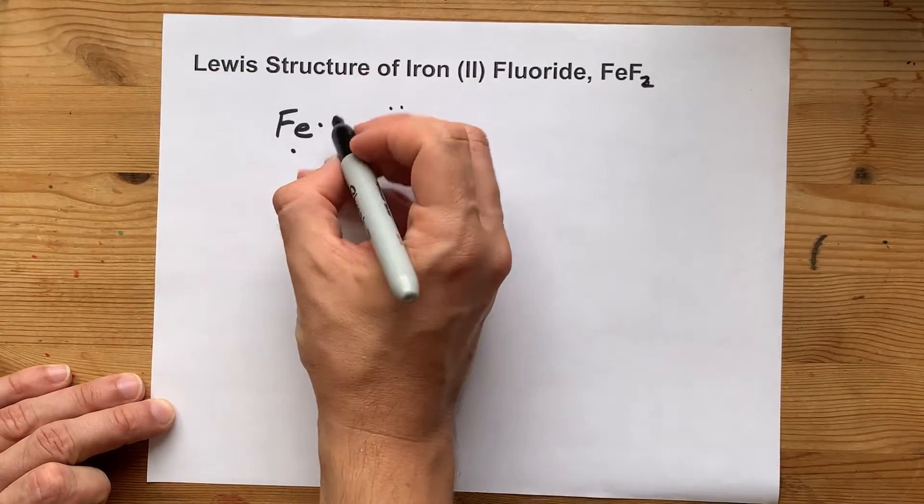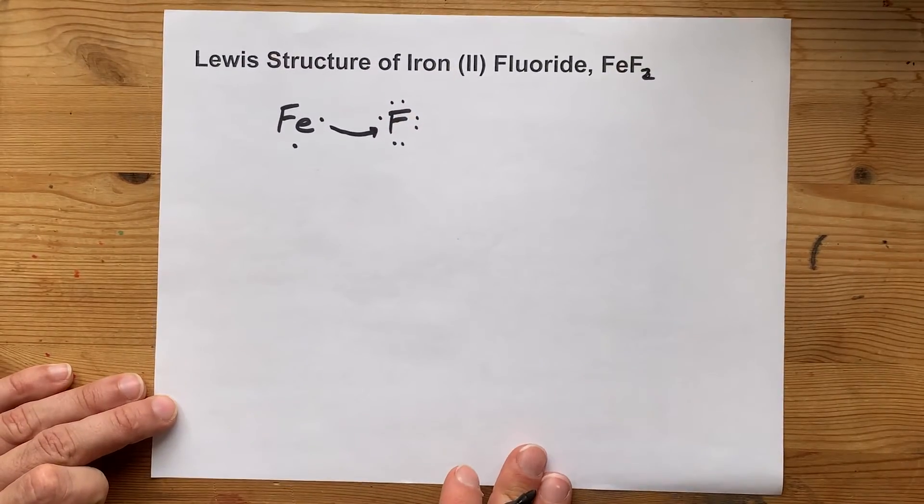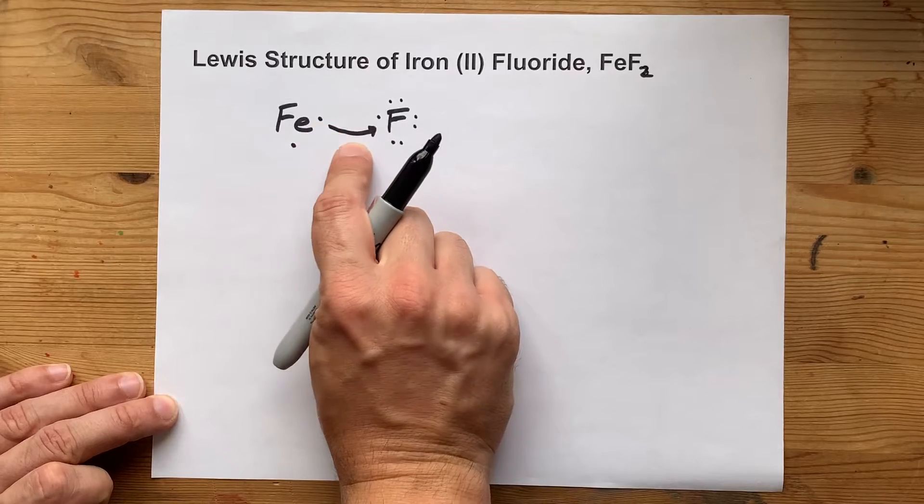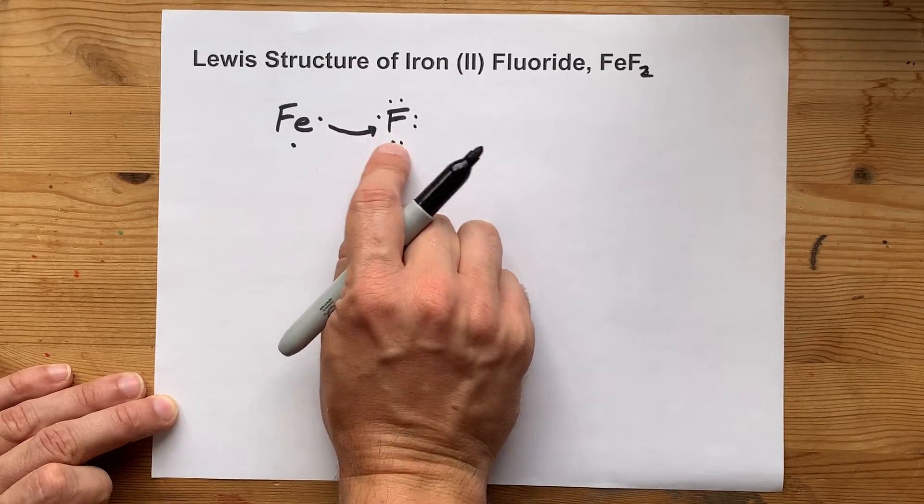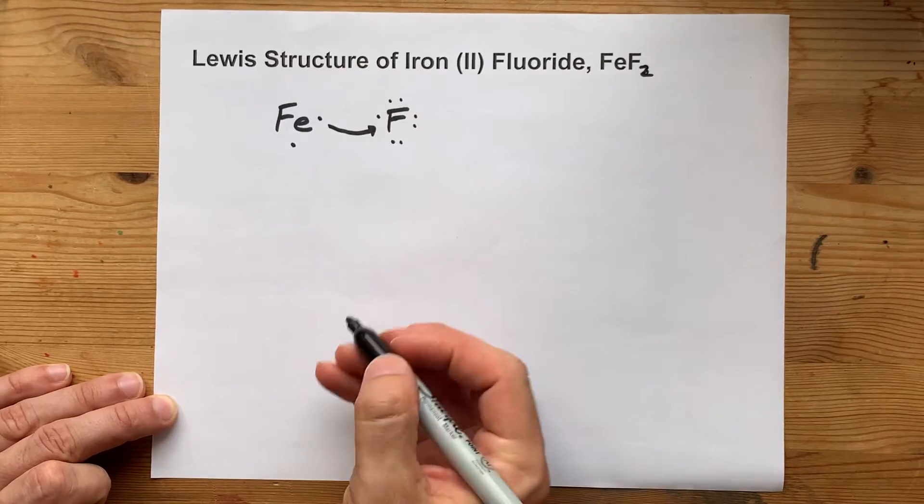Now, iron, the metal, is going to give its electrons away to complete the octet of fluorine atoms. This one electron goes to the fluorine, which currently has 7, now has 8. That completes the octet on fluorine.